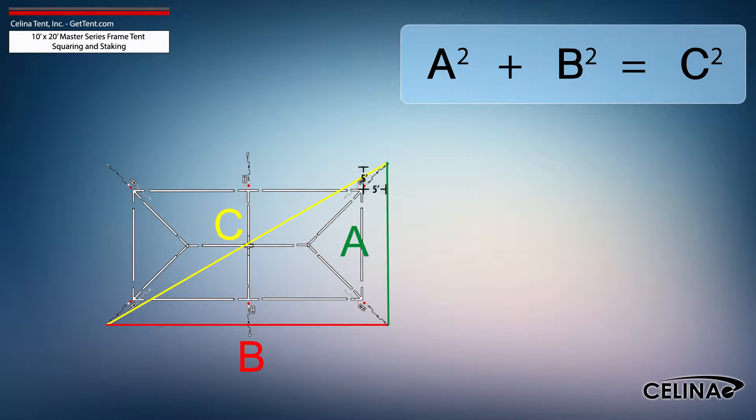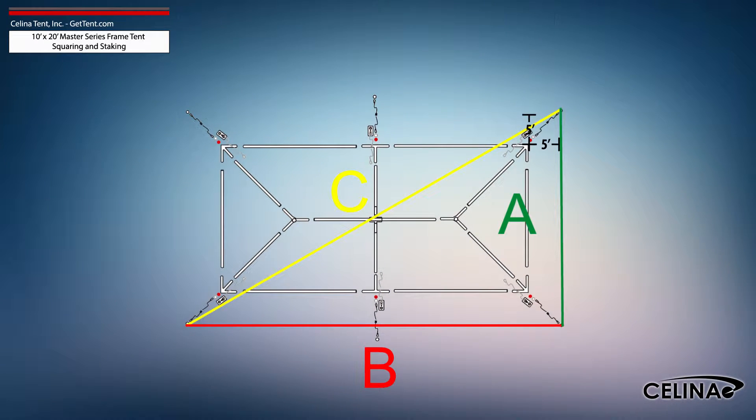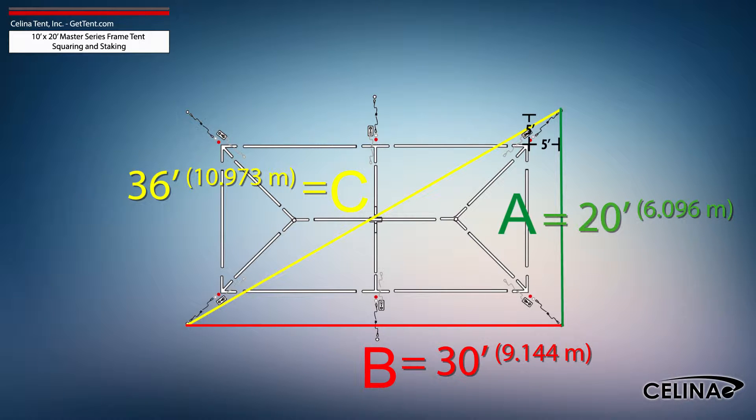Using the Pythagorean theorem and adjusting out for 5-foot staking, the entire tent footprint will be 20 feet by 30 feet with a 36-foot diagonal length.